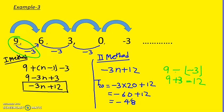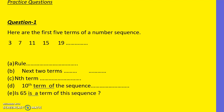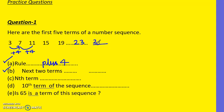Here's a practice session — you can pause the video and have a go. So checking the working: from 3 to 7 is plus 4, 7 to 11 is plus 4, so the rule is plus 4. For the next two terms after 19: 19 plus 4 is 23, and 23 plus 4 is 27. So the next two terms are 23 and 27.